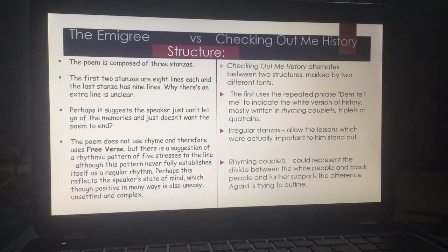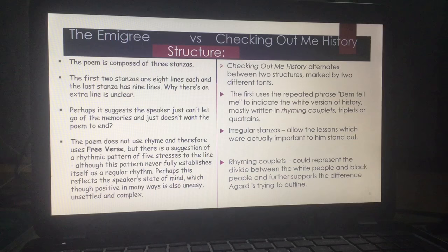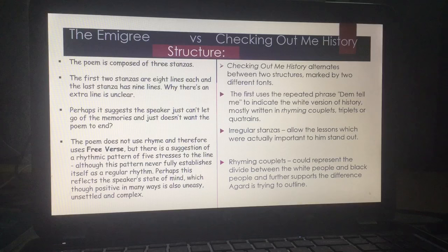Checking Out Me History alternates between two structures, and there are two different fonts. The first is repeated by the phrase 'Dem tell me' to indicate the white version of history, and that is written mostly in rhyming couplets with triplets or quatrains. By outlining the two different structures through font, we have a clear difference between the history he is being taught — the white history — and the history he longs to hear about, which is the black history. Irregular stanzas allow the lessons which are important to him to stand out, and the rhyming couplet could further heighten this divide between black and white people.